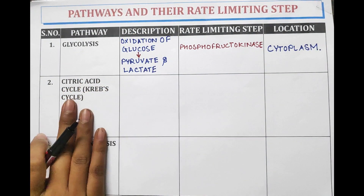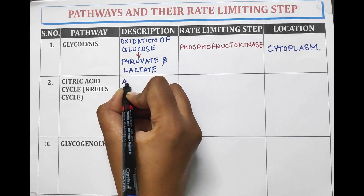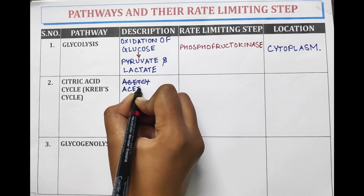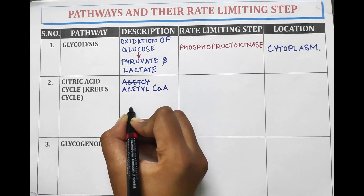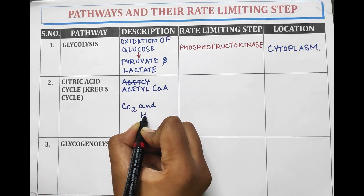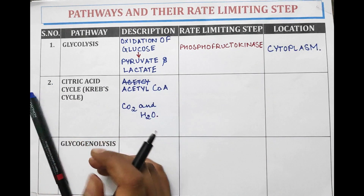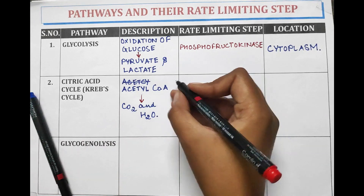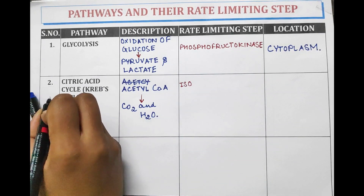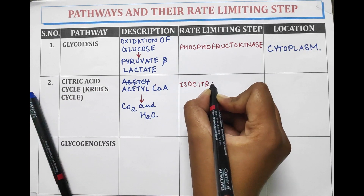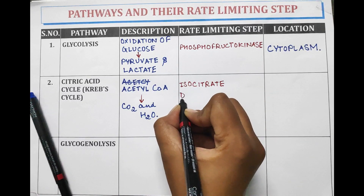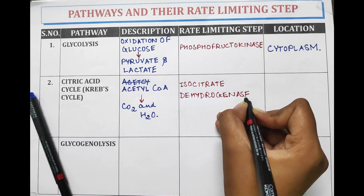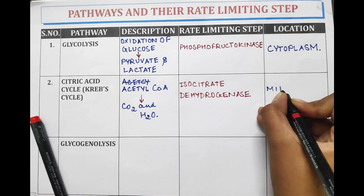Citric acid cycle, also known as Krebs cycle. In this, acetyl coenzyme A is converted into carbon dioxide and water. The rate limiting step in citric acid cycle is isocitrate dehydrogenase.